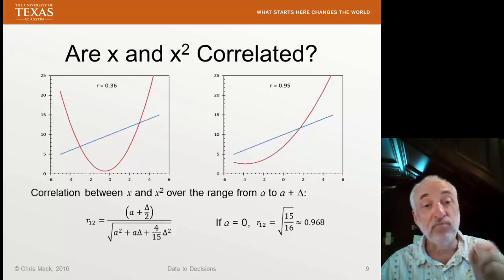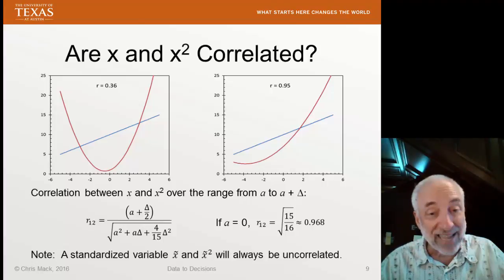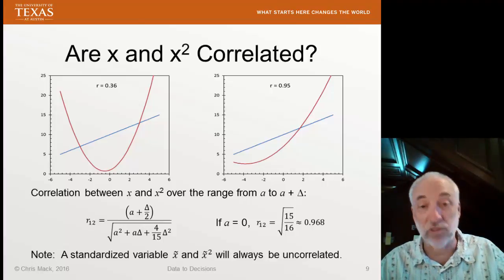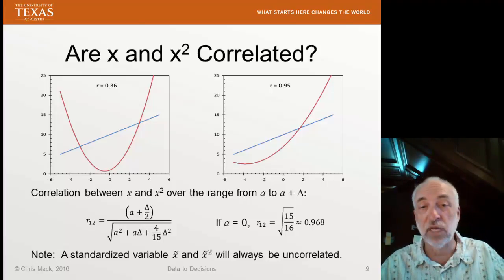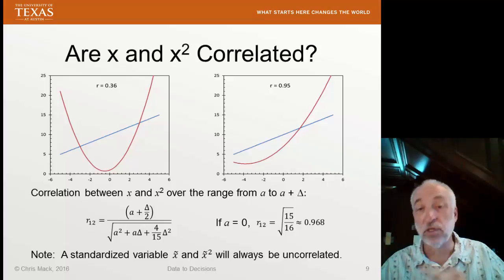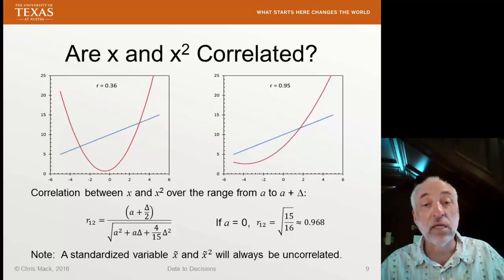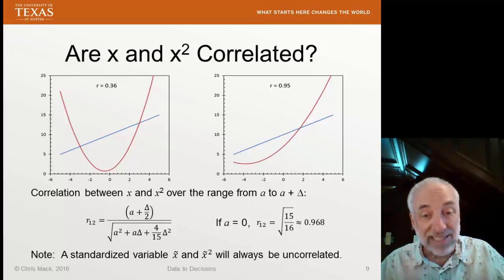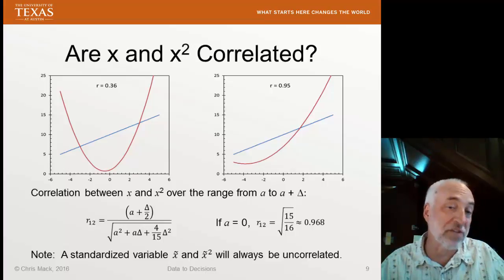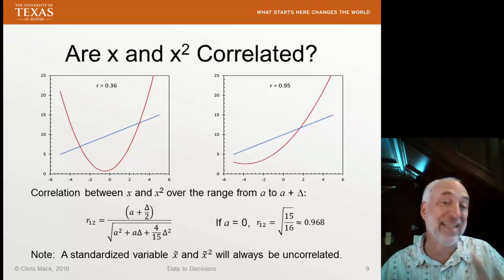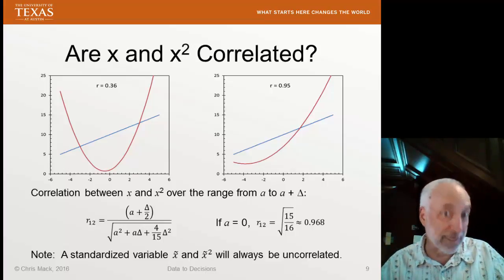As an aside, if we standardize the variables — subtract off their means and divide by the standard deviations — then the standardized x and x squared will always be uncorrelated. We're going to talk about standardization in the next lecture and come back to that topic.